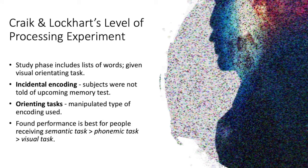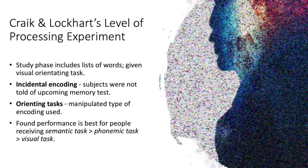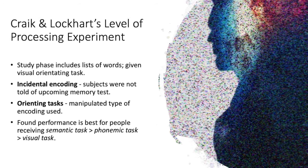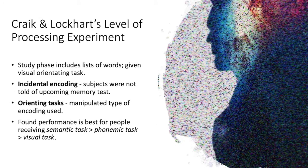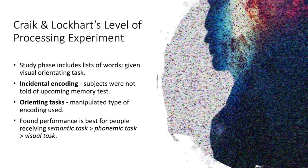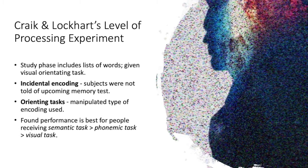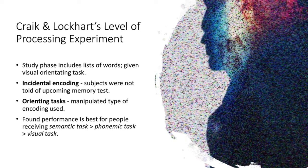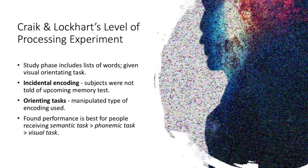Craik and Lockhart's levels of processing experiment involved a study phase which included lists of words and individuals were given a visual orienting task. There was incidental encoding whereby subjects were not told of the upcoming memory test, and there were orienting tasks which included manipulating the type of encoding used.